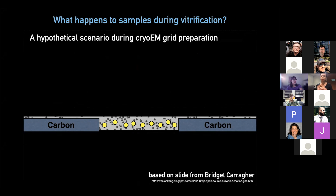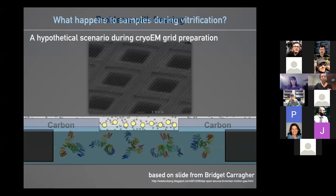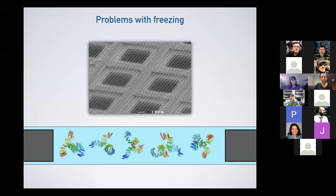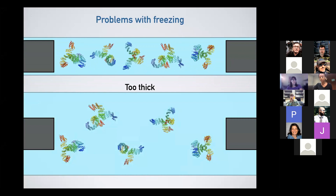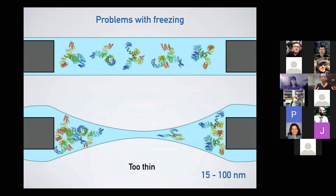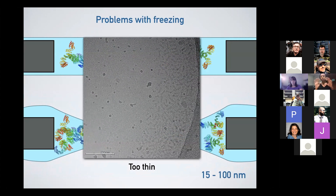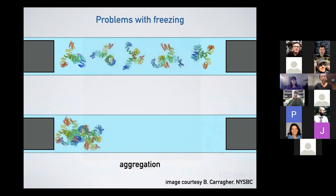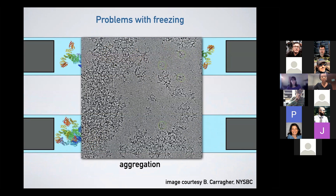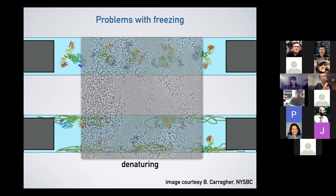Here I'm highlighting an example grid that is wholly carbon to orient you. Some problems you can run into: first, your sample may be too thick — above the optimal range of 15 to 100 nanometers, which varies based on your sample. You can also see that your layer is too thin, where you're losing your sample and seeing it aggregate along the edges of the hole. You can also run into issues with aggregation if it's being pushed towards the edge of the hole or concentrated at the air-water interface, where you're more likely to see denaturing of your protein. This image highlights that aggregation and denaturing can occur at the same time.